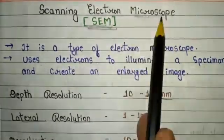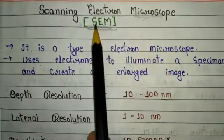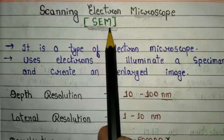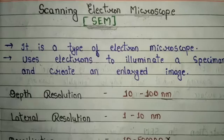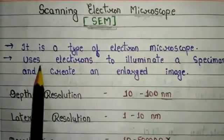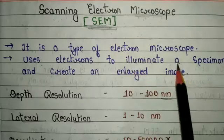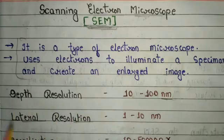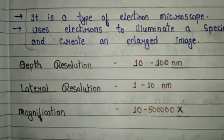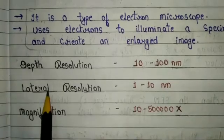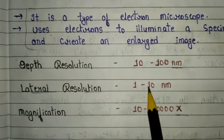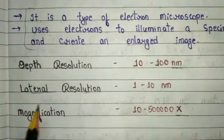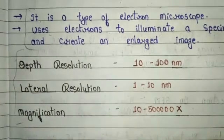Electron microscopes are basically two types: SEM (scanning electron microscope) and TEM (transmission electron microscope). In this particular video we completely discuss about SEM. The basic introduction of SEM is that it is a type of electron microscope that uses electrons to illuminate a specimen and create an enlarged image. The depth resolution of SEM is 10 to 100 nanometers, lateral resolution is 1 to 10 nanometers, and magnification power is 10 to 5 lakh X.